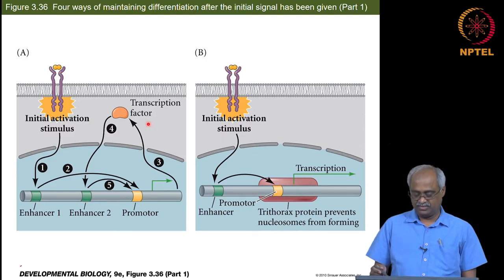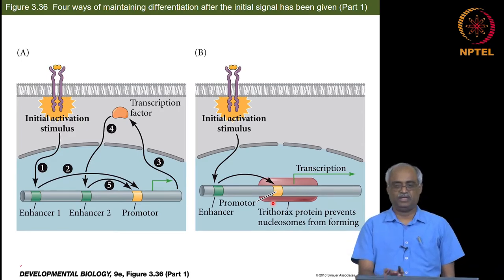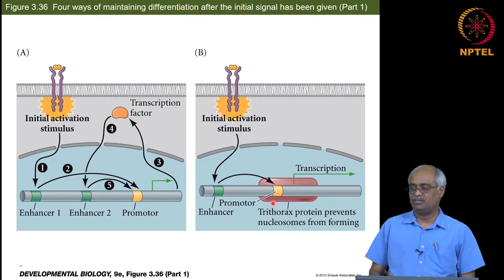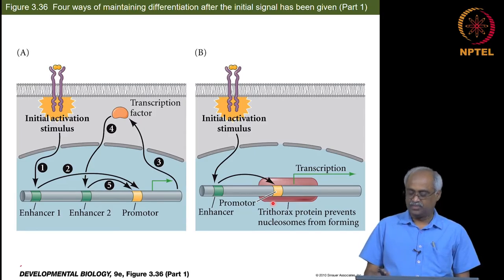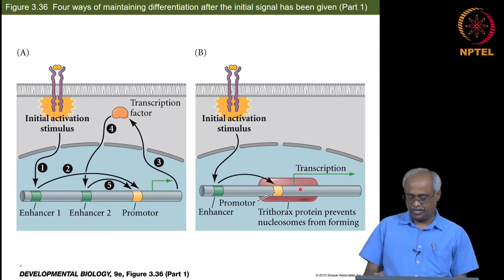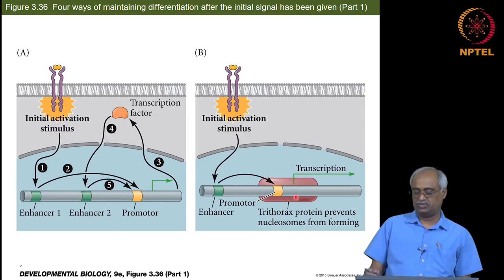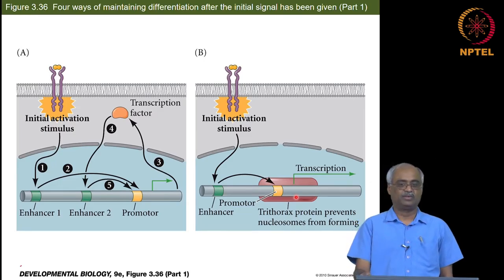The second mechanism is permanent chromatin modification — permanent meaning during that particular organism's lifetime in that particular differentiated tissue. Proteins like trithorax complex proteins bind and prevent nucleosomes from assembling there, so they maintain euchromatin status.